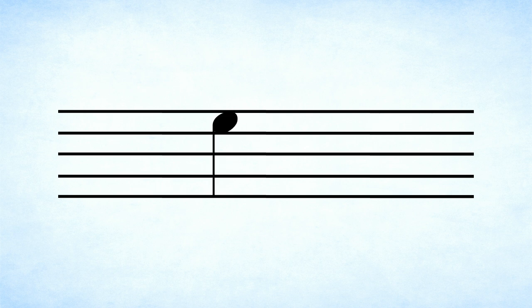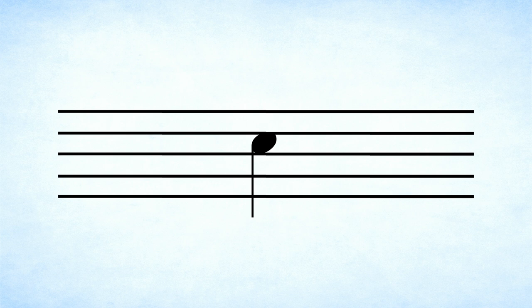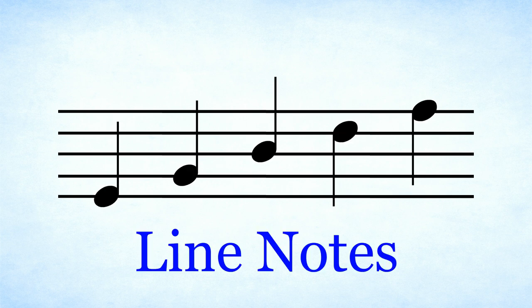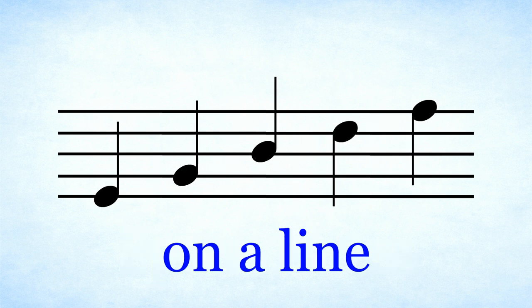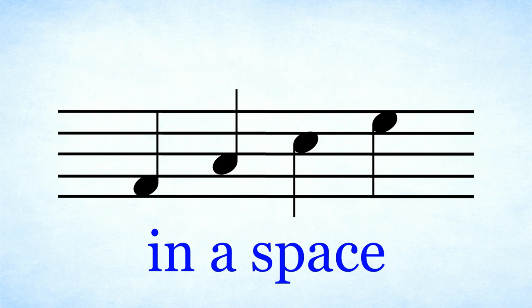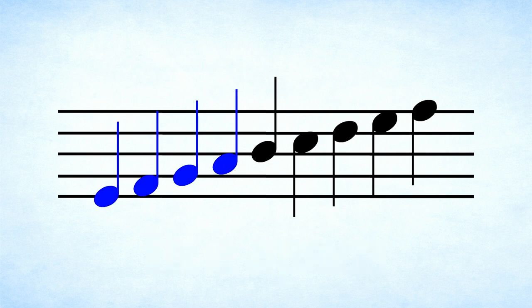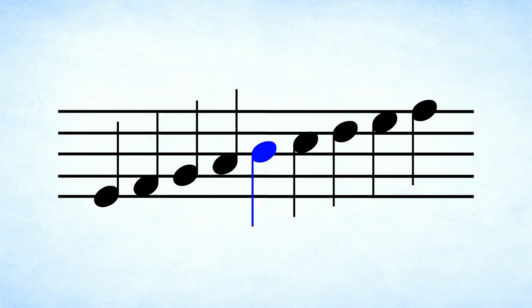For example, this note is higher than this one. Notes can either have a line going through them or be between two lines. We call these line notes and space notes, and we say notes are either on a line or in a space. Notice how the notes below the middle line have the stem going up and the notes above the middle line have the stem going down. The stem of the note on the middle line can be either up or down, and that's usually just to visually match the notes around it. Remember though that whether a note has the stem going up or down it still means the same number of beats.